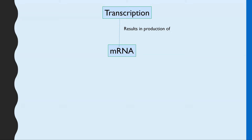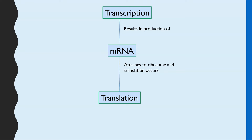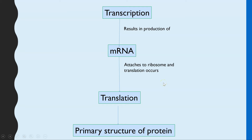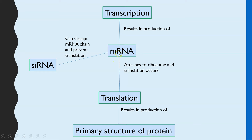Transcription is the process that results in the production of mRNA. Translation is the process where mRNA is used to code for a polypeptide chain — that is protein synthesis in a basic summary. If we now add in translational control, this is where small interfering RNA can disrupt or destroy the mRNA that has been transcribed, and this is what we mean by RNA interference.